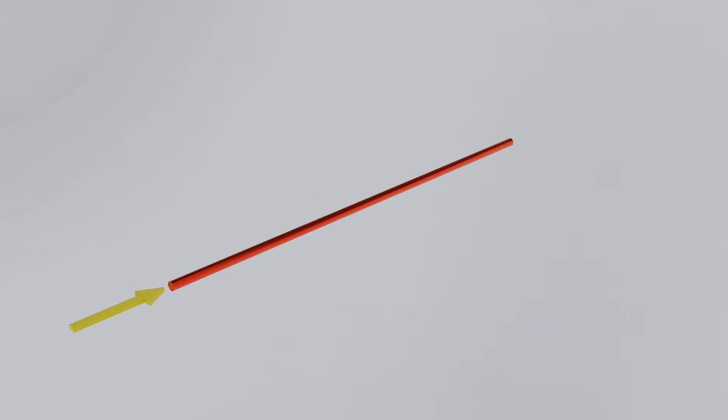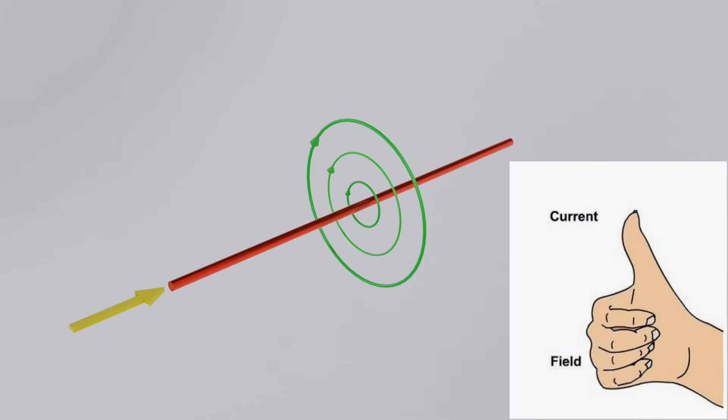We have a copper wire as conductor. When we flow current through a conductor, a magnetic field is produced around the conductor. The direction of the magnetic field is according to the right-hand thumb rule.